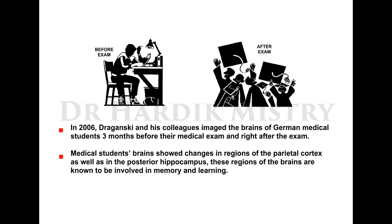In 2006, Draganski and colleagues imaged the brains of German medical students three months before their medical exam and right after the exam. The students' brains showed changes in the regions of the parietal cortex as well as in the posterior hippocampus — regions known to be involved in memory and learning.